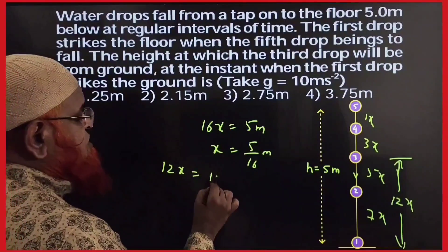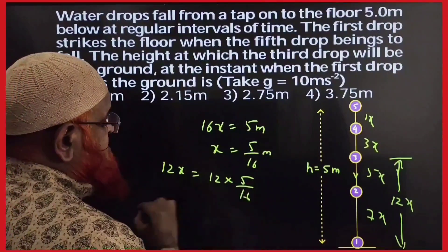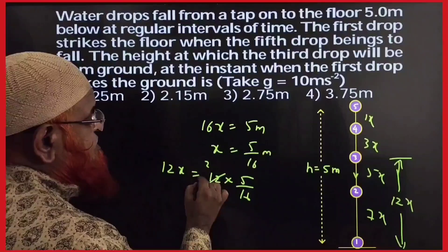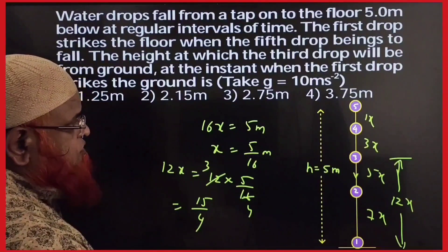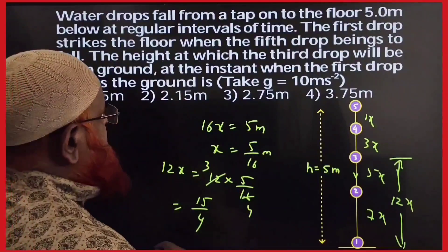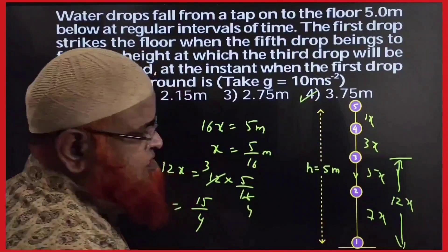Therefore, 12x is nothing but 12 into 5 by 16. So, 4, 3s are 12, 4s are 16. Therefore, 3, 5s are 15 divided by 4. So, 15 divided by 4 is nothing but 3.75 is your answer. That's it. Thank you.